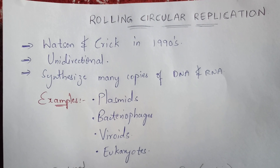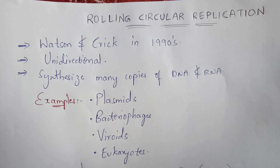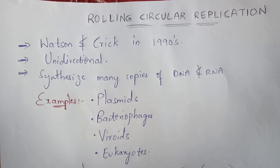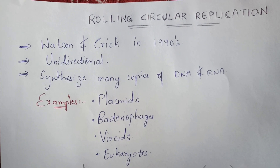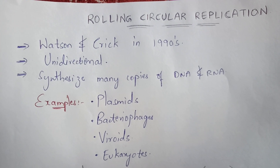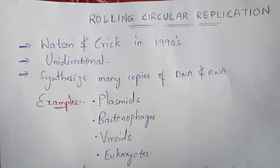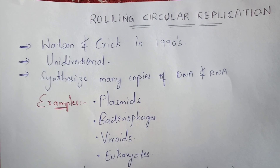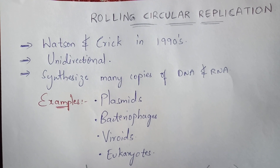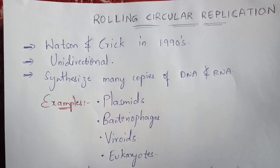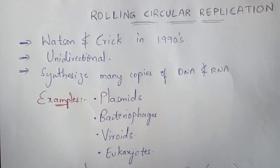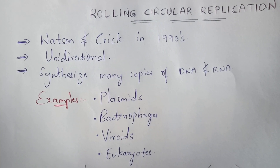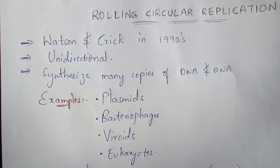Rolling circular replication is unidirectional. The direction of this replication is only at one side — 'uni' means single, so only one side or direction of replication takes place. Hence it is named as unidirectional.